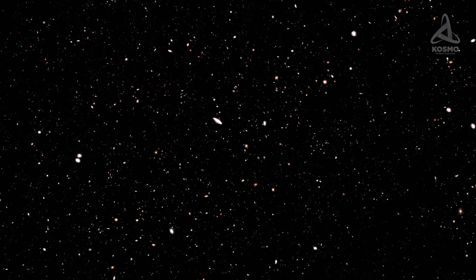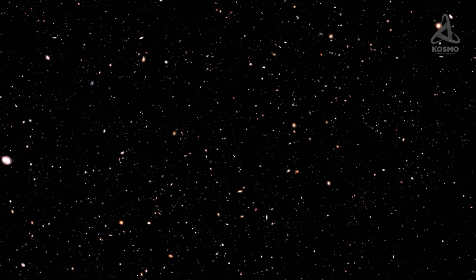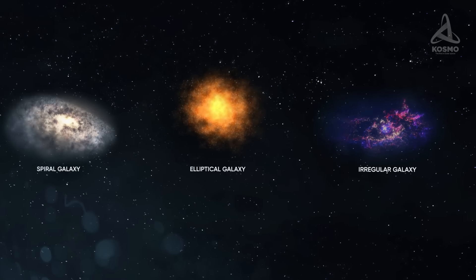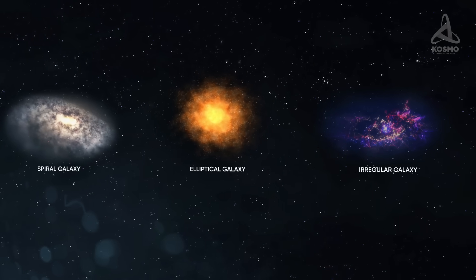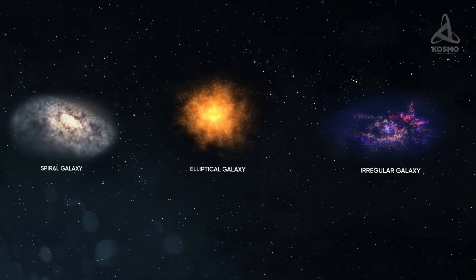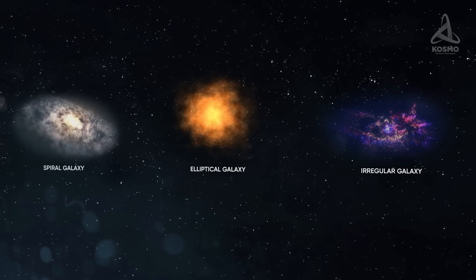If we look at the large-scale structure of the Universe, we will notice the following. Stars form galaxies of three basic types: spiral, elliptical and irregular. It is quite easy to find the central point in the first two, whereas it is considerably harder to do so in those of the latter type.